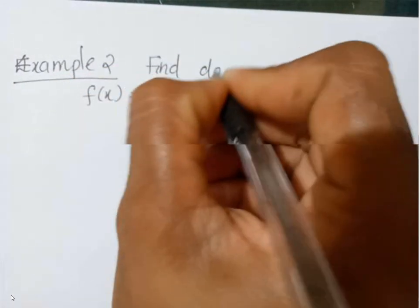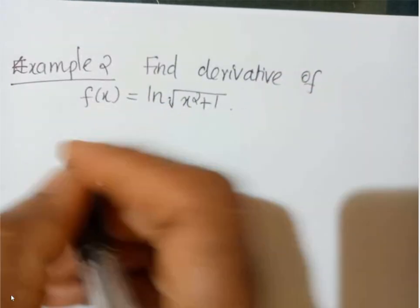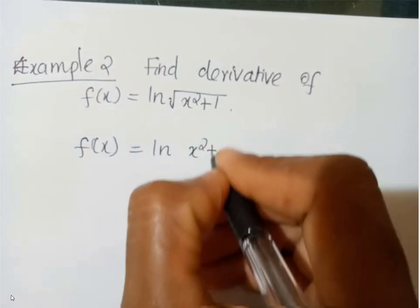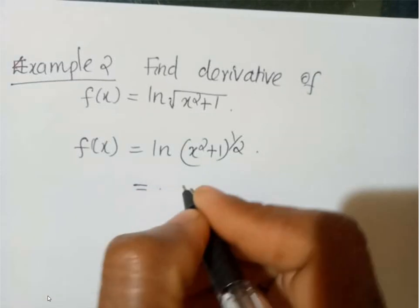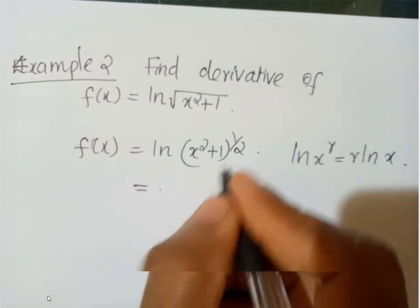Another example: find the derivative of r = ln(√(x² + 1)). We rewrite this as (x² + 1)^(1/2), then apply the rule ln(x^r) = r·ln(x), giving (1/2) ln(x² + 1).